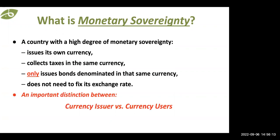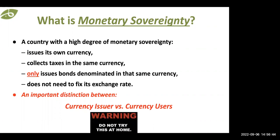MMT creates a clear distinction between a currency issuer versus currency users. The sovereign government is the issuer of the national currency; the rest of us — individuals, businesses, non-profits, foreign entities — are all users of that national currency. So the sound finance principles we apply as individuals don't necessarily apply to the sovereign currency issuer. This is for sovereign governments and public policies.